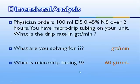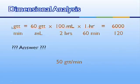Let's try one more problem. 100 milliliters of D5 0.45% normal saline over two hours with microdrip tubing. We're solving for drops per minute. Microdrip tubing is 60 drops per milliliter — notice the problem didn't tell you that; you have to remember it. We start with drops on top: 60 drops per milliliter, deliver 100 milliliters in two hours, convert hours to minutes with 1 hour equals 60 minutes. The math: 60 times 100 times 1 is 6,000; 2 times 60 is 120. 6,000 divided by 120 gives us 50 drops per minute.